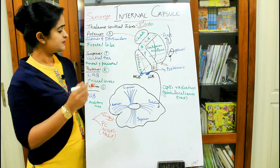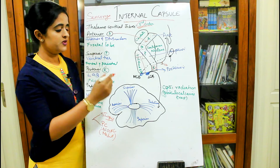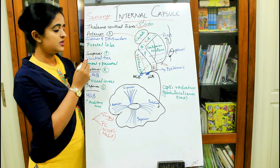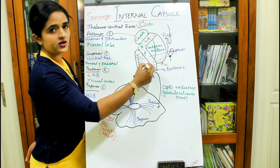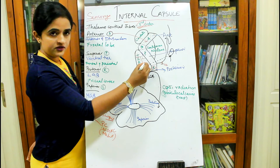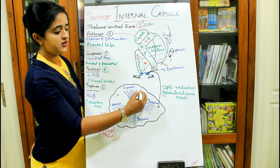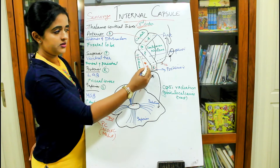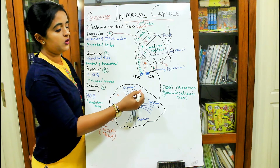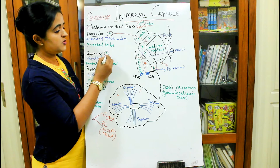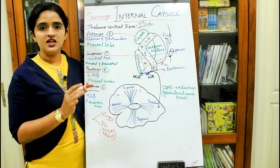The superior thalamic radiation, as the name implies, goes upward. It arises from the ventral tier of the thalamus, which is a group of nuclei in the lateral aspect. It is projected to both the frontal lobe and the parietal lobe. It passes through the posterior limb of the internal capsule.